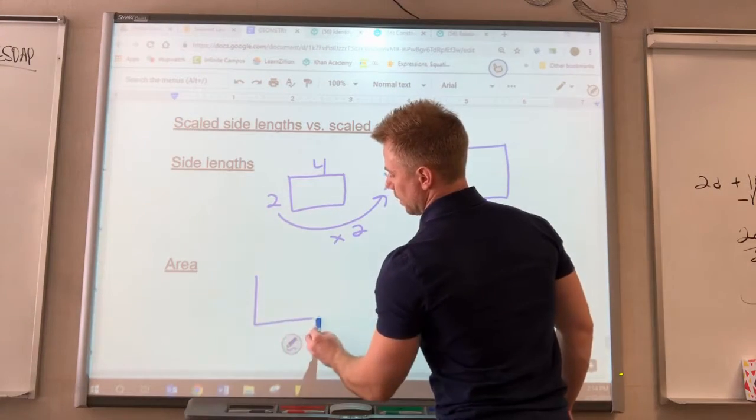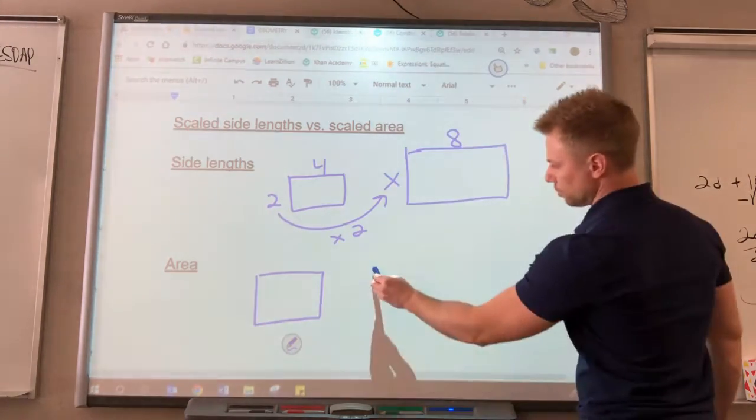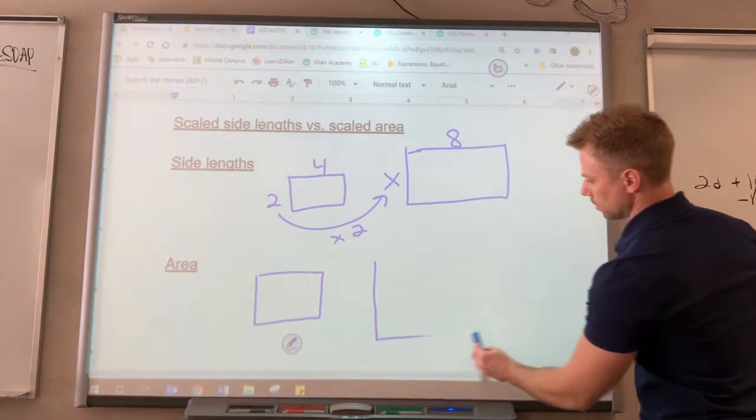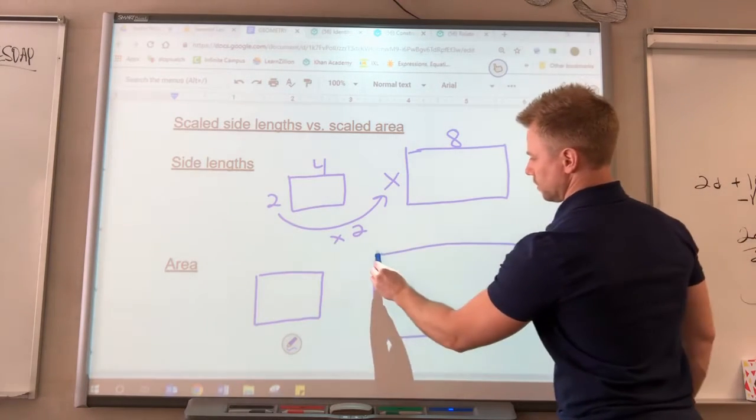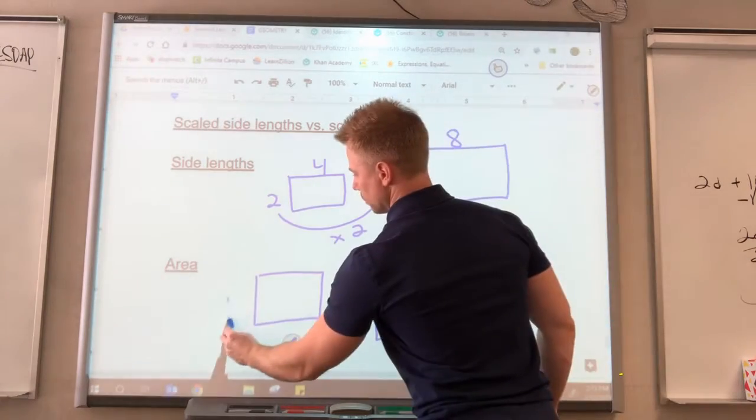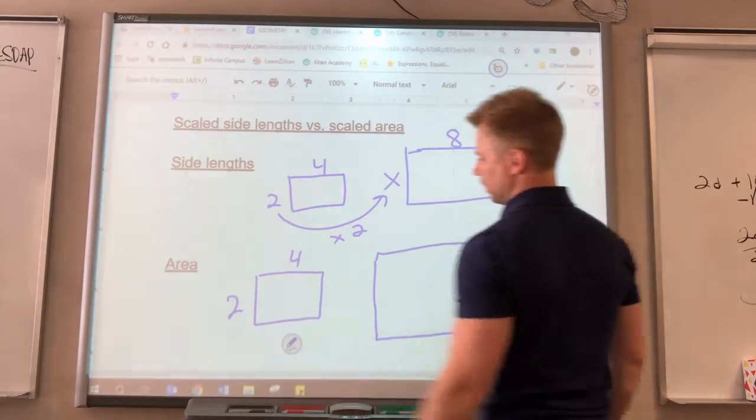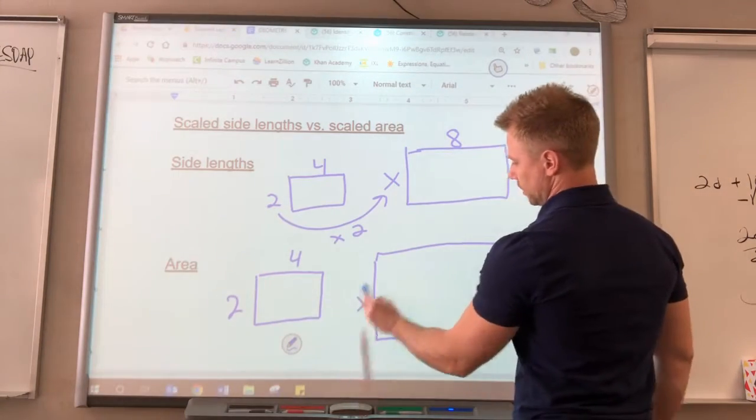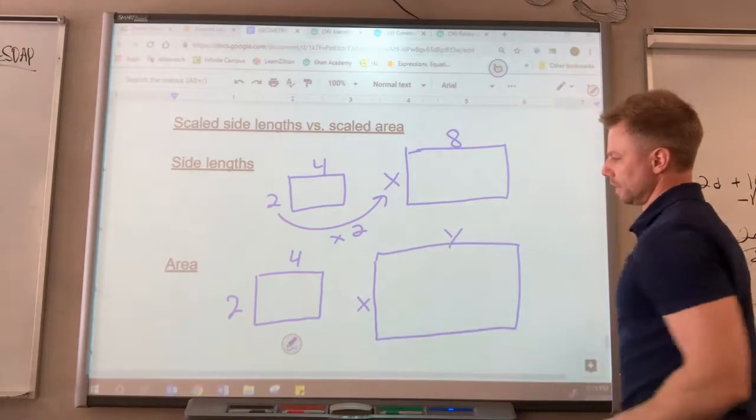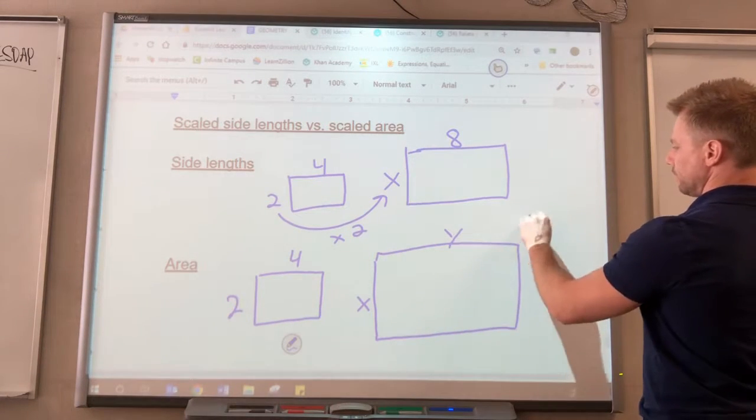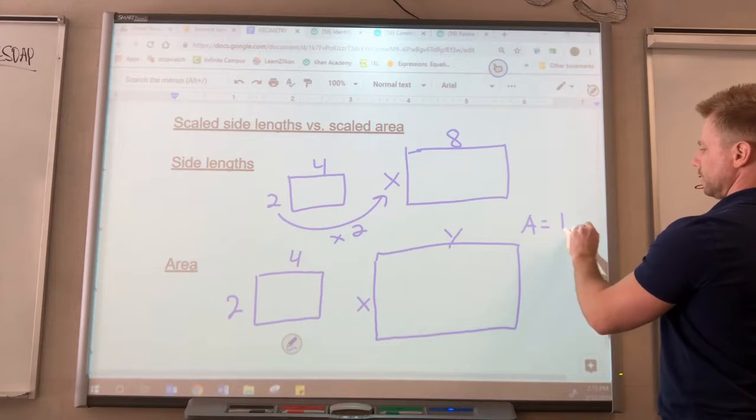When we're doing scaled area, we have two rectangles. Say this is 2 and this is 4, then we're going to say this is x and this is y. Now remember, area is length times width.